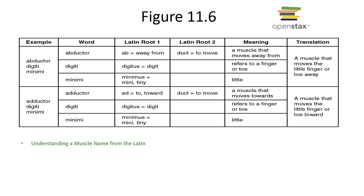This slide shows how muscles can be named — sometimes based on their shape, their movement, their fascicle organization, or their action. For example, 'ab' means away from and 'duct' means to move, so an abductor is a muscle that moves away. 'Digitus' refers to a finger or toe, so it might refer to a muscle that moves the little finger or toe away. This gives you an idea of how muscles are named from their Latin origins.